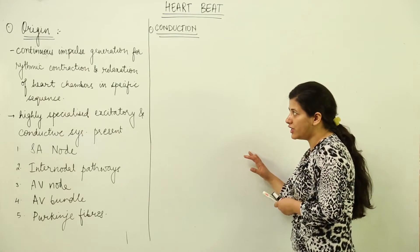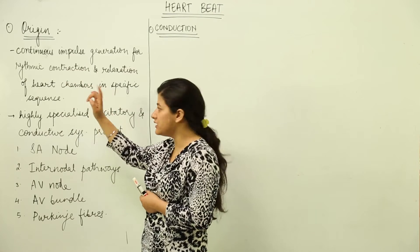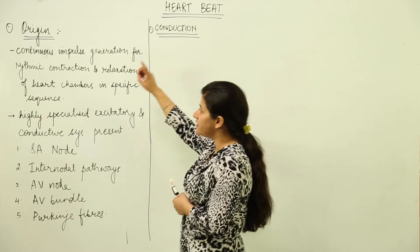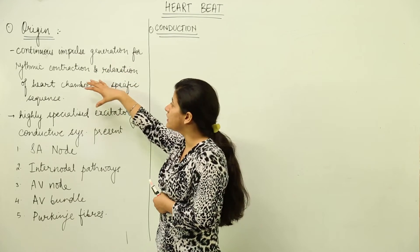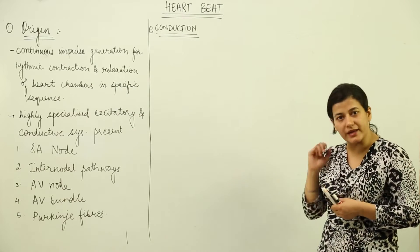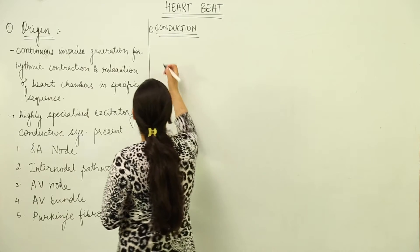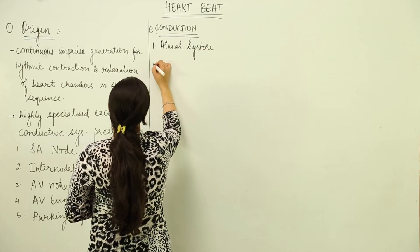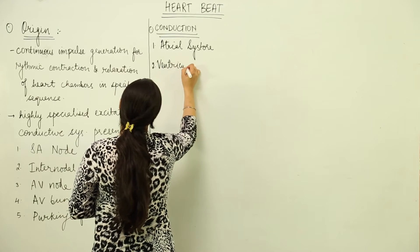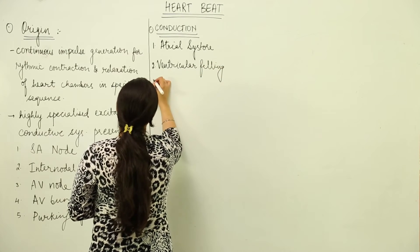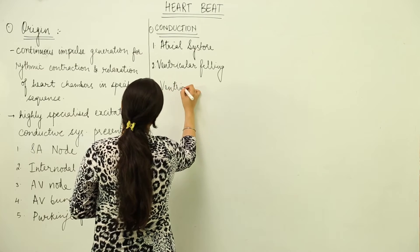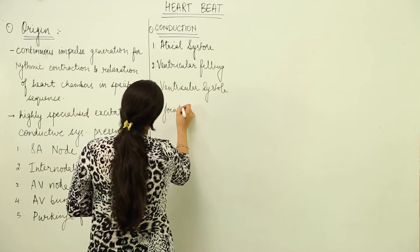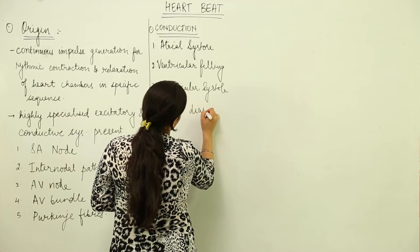Talking about origin — the heartbeat, if we have to define it, is a continuous impulse that is generated at a specific site. That impulse generation is such that it is continuous and causes the contraction and relaxation of heart chambers in a specific sequence. The four sequential steps are: first, atrial systole; second, ventricular filling; third, ventricular systole; and last, joint diastole or ventricular diastole.